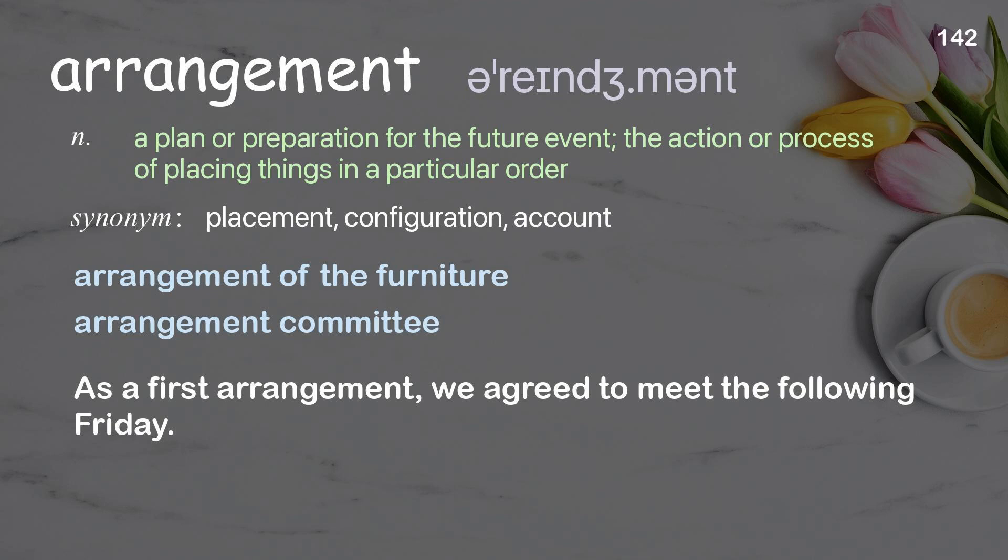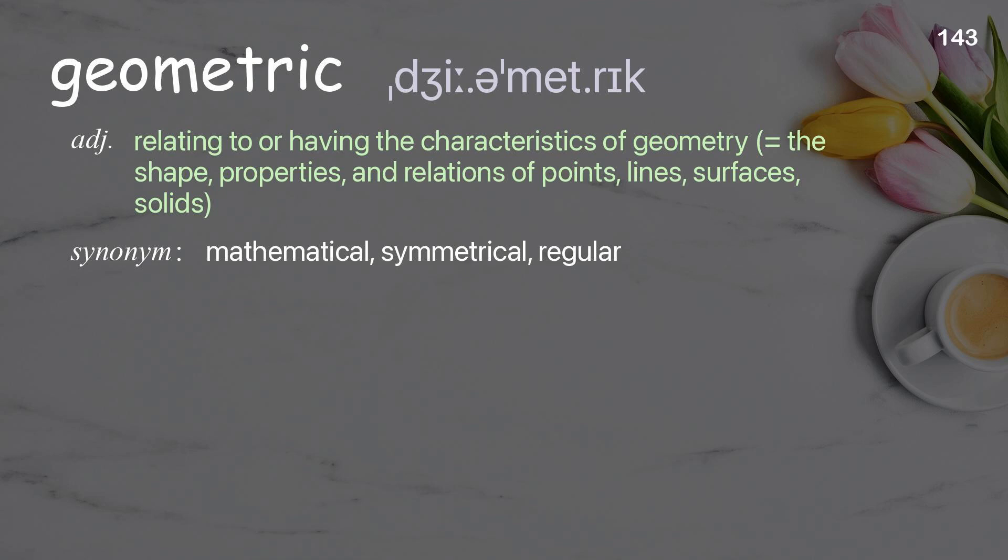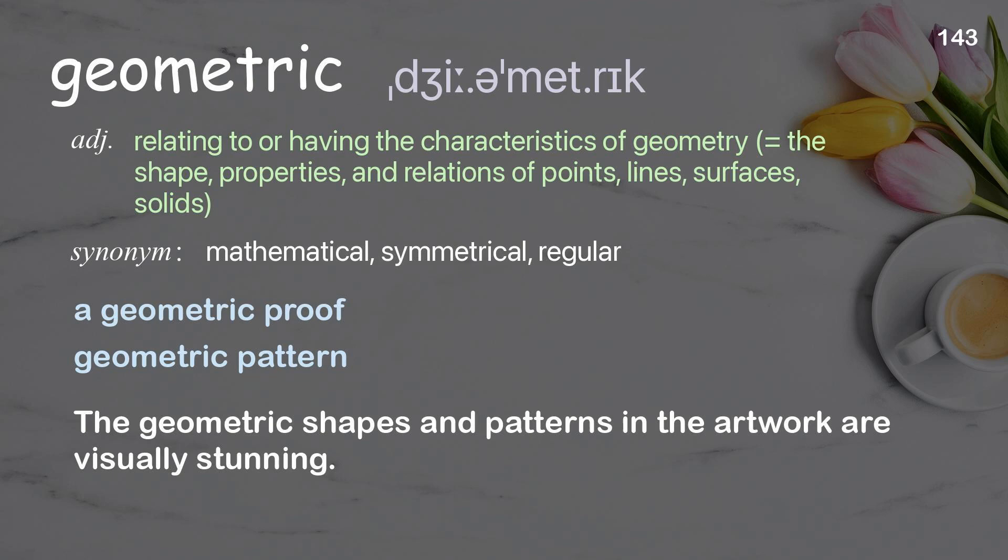Geometric: relating to or having the characteristics of geometry — the shape, properties, and relations of points, lines, surfaces, and solids. Examples: a geometric proof, geometric pattern. The geometric shapes and patterns in the artwork are visually stunning.